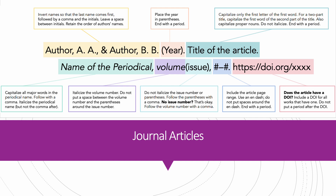Journal articles. In journal articles, author and year are formatted the same as before; the rest differs. For the title of the article, capitalize only the first letter of the first word. For a two-part title, capitalize the first word of the second part. Also capitalize proper nouns. Do not italicize. End with a period. Next is the name of the periodical — capitalize all major words in the periodical name, follow with a comma, and italicize the periodical name but not the comma after.